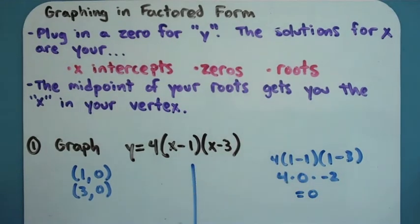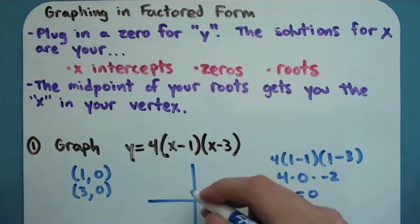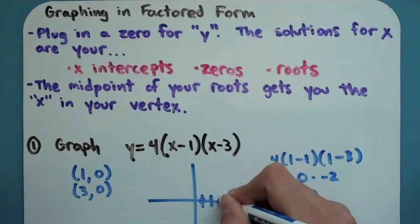So if I were to graph this parabola, I know that 1, 0 is on the graph, and I know that 3, 0 is on the graph. So I have those two dots right there.